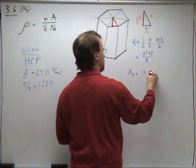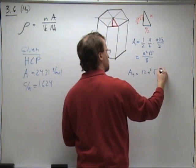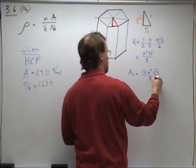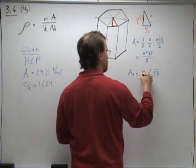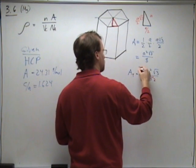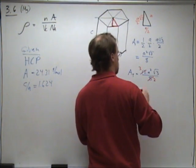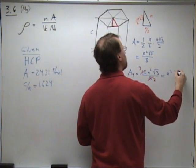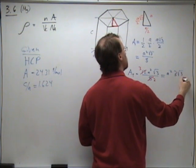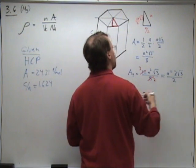is 12 a squared square root of three over eight. Do some cancellations, and we end up with a squared times 3 square root of 3 over 2.